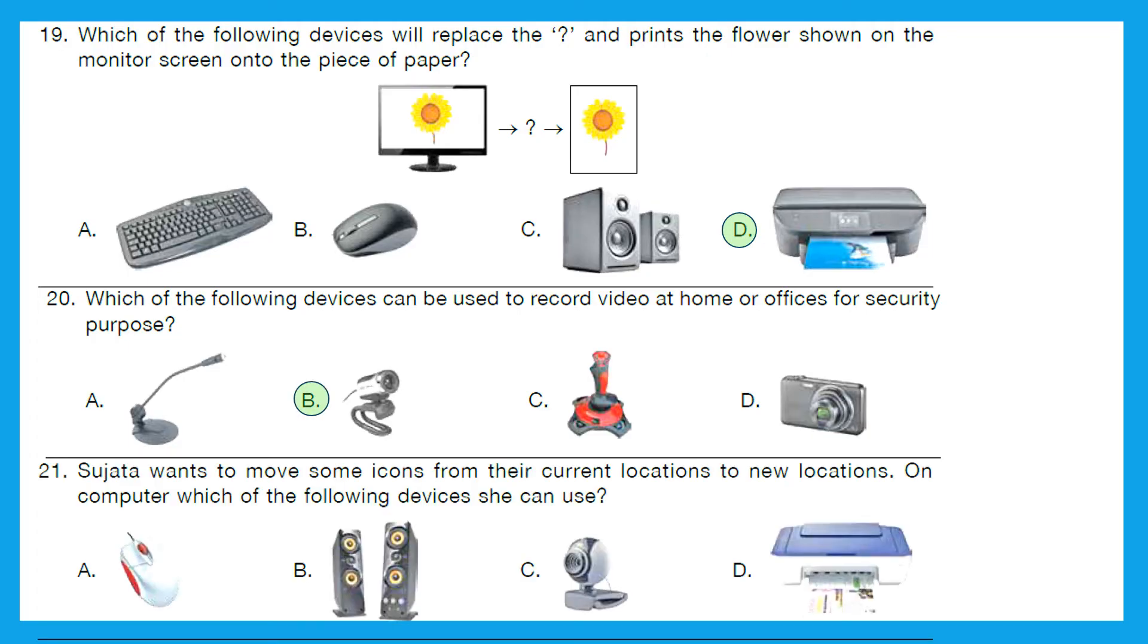Question 21: Sujata wants to move some icons from their current locations to new locations. On computer, which of the following device she can use? So which device do we use to do anything on the computer? If we have to shift something through cursor, which is the device? Is it mouse, speaker, webcam, scanner, or printer? The right answer is option A, mouse.